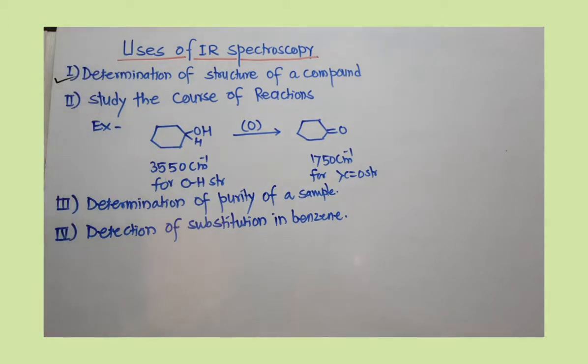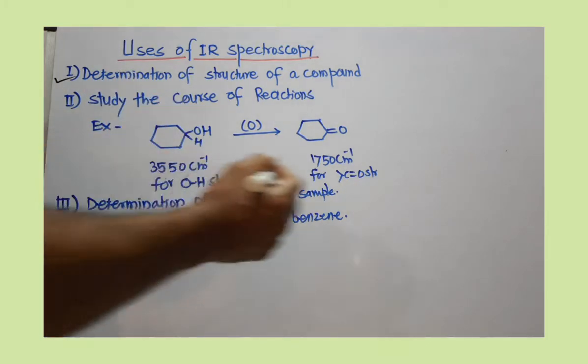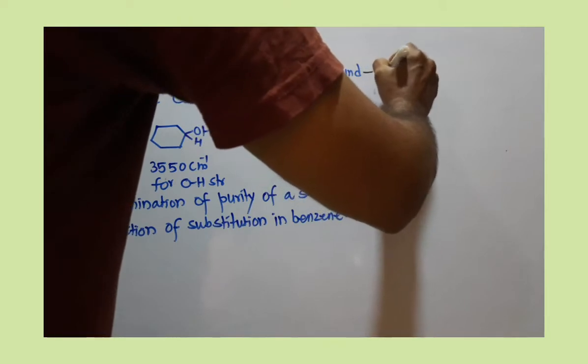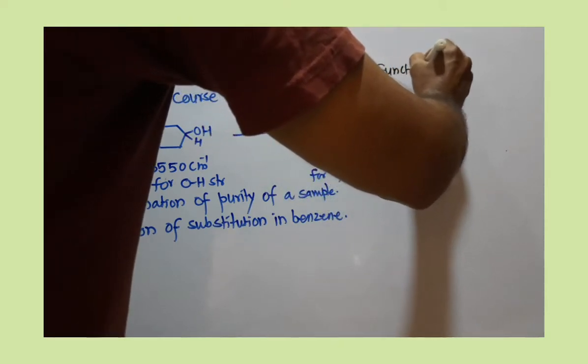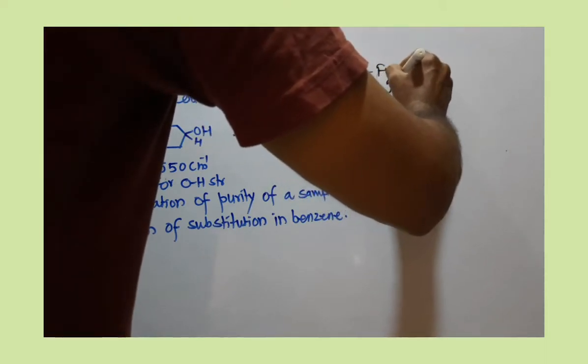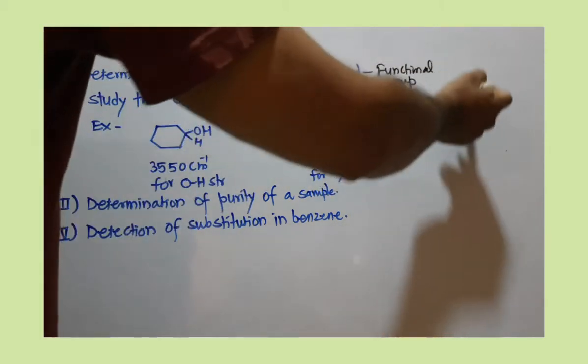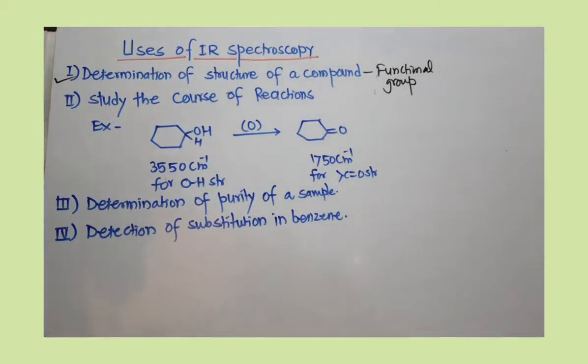It is used to determine the structure of a compound. From the IR spectrum you can find out the functional group present in the molecule. Functional group detection is important. You can easily find out the functional group present in the molecule by using IR spectrum, and then this information is utilized for the determination of structure by using other spectroscopic techniques.